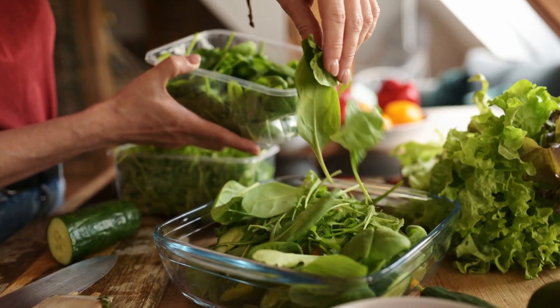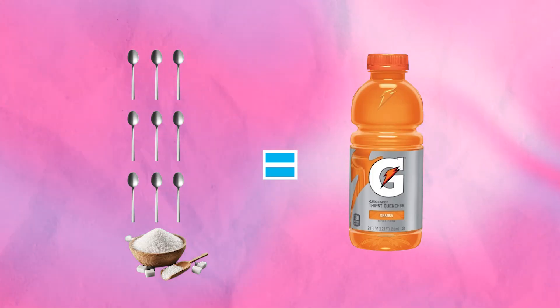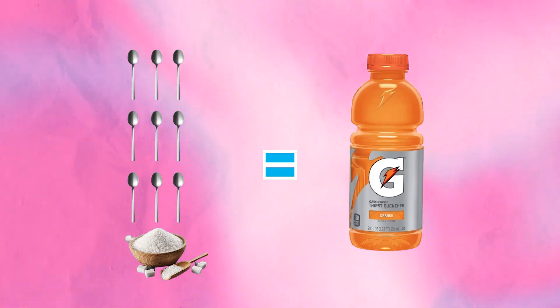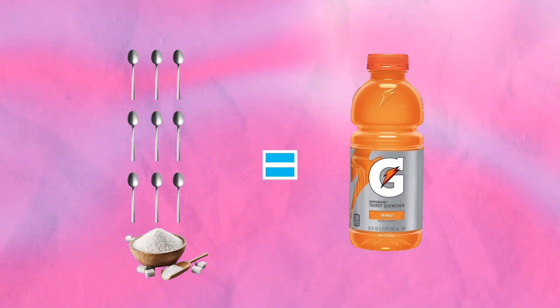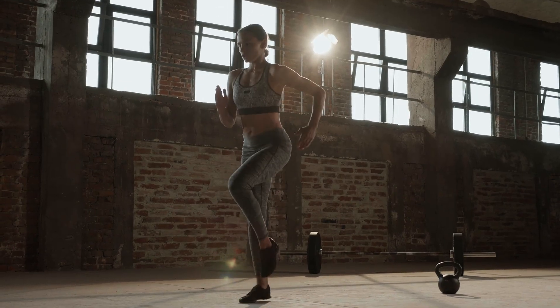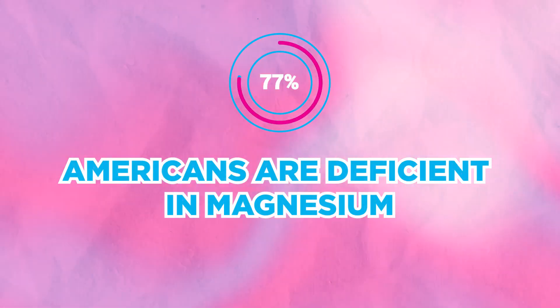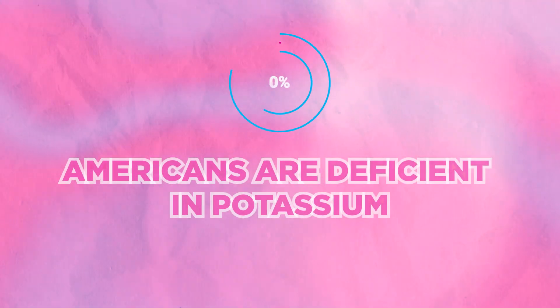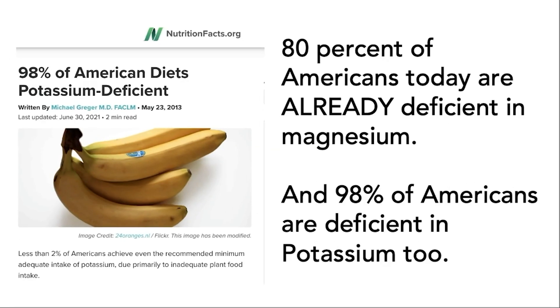Most people just don't grab those foods or incorporate them enough. So rather than hope you have them at home or go to the store regularly, an easier solution I want to give you can be done in 30 seconds a day to surge energy, recover more, boost immune health, and power your heart. 80% of Americans are already deficient in magnesium, and 98% are also deficient in potassium.